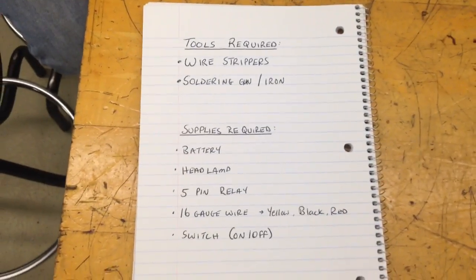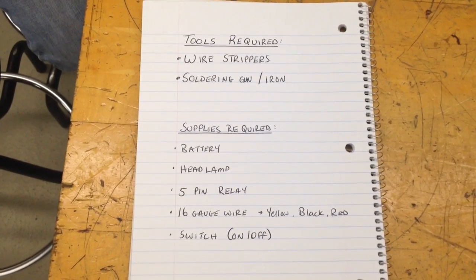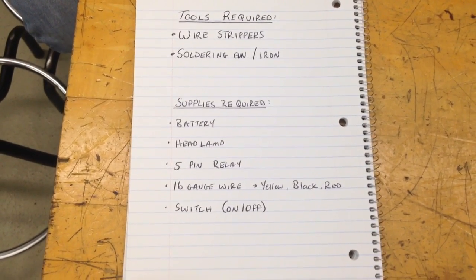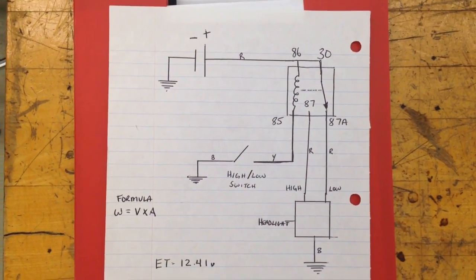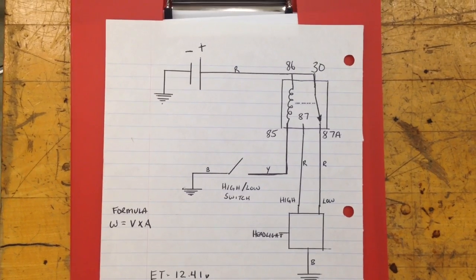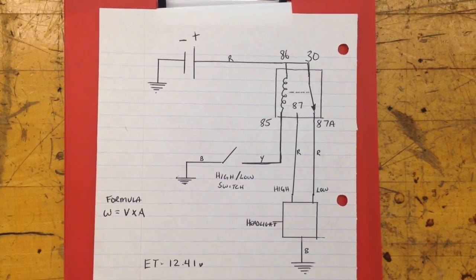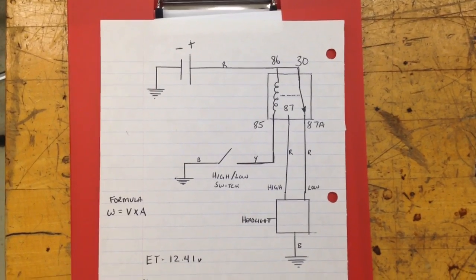These are the supplies and tools you're going to need. Here's the diagram we've drawn out to illustrate how all the wires are connected to the relay, then to the headlight and to the switch. Now we're going to demonstrate how to actually do that.